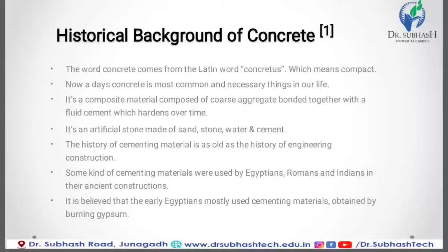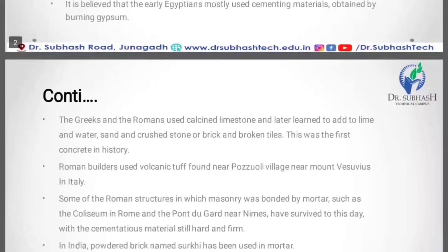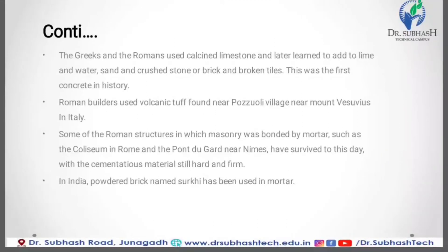Kinds of cementing materials were used by Egyptians, Romans, and Indians in their ancient constructions. It is believed that the early Egyptians mostly used cementing materials obtained by burning of gypsum. The Greeks and Romans built with calcined limestone and later learned to add lime and water with sand and crushed stone or brick and broken tiles. This was the first concrete in history.